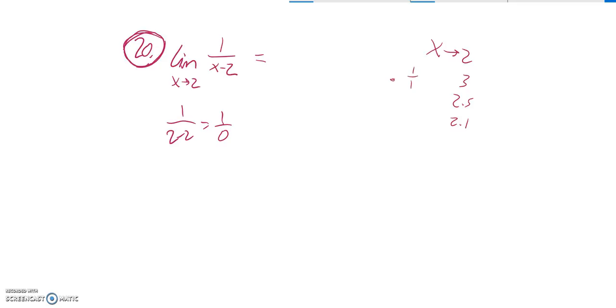When it's 2.5, it would be 1 over 1 half, which is 2. Notice that as I get closer to 2 as an x value, this thing starts to take off towards infinity. It grows without bound.